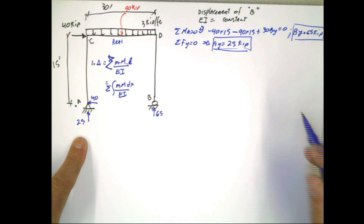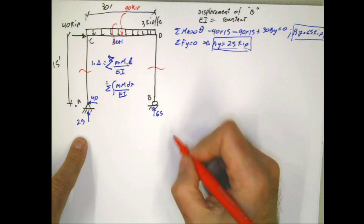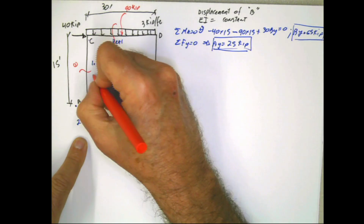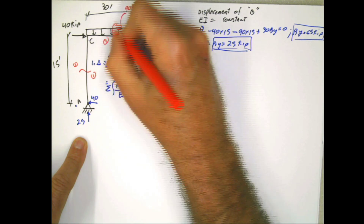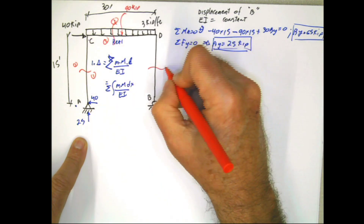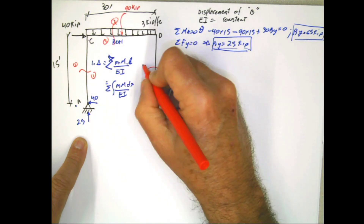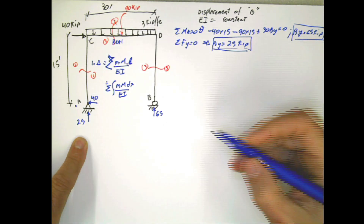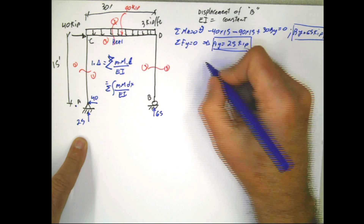We have to study the effect at section 1-1, section 2-2, and section 3-3. Those are the sections we need in order to finish this problem. This is the real structure.